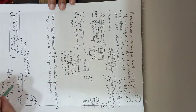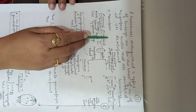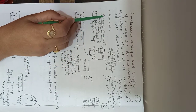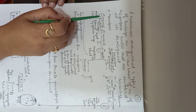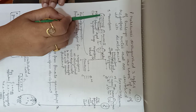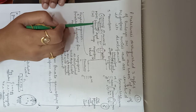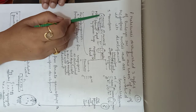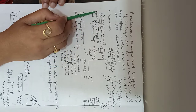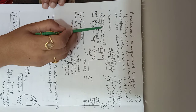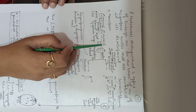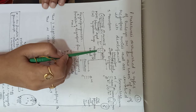Here in this diagram, I have shown monosporic development. This is the megaspore mother cell. This megaspore mother cell will undergo meiosis 1, in which karyokinesis is immediately followed by cytokinesis, and two haploid cells will be formed. Then meiosis 2 will occur and four haploid cells will be formed.